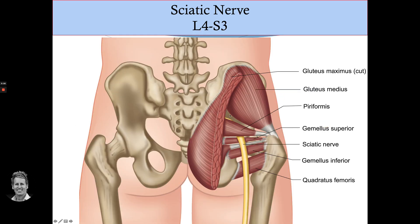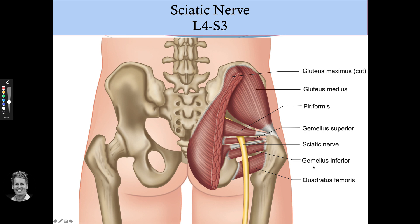Looking at the sciatic nerve: you can see the piriformis, and the sciatic nerve will normally come below the piriformis, though in about 20% of the population it may come through the muscle. It exits through the greater sciatic foramen, then splits further down. You can also see the six deep lateral rotators here, including the gemelli and the quadratus femoris.